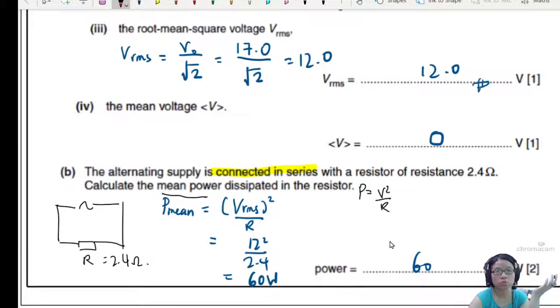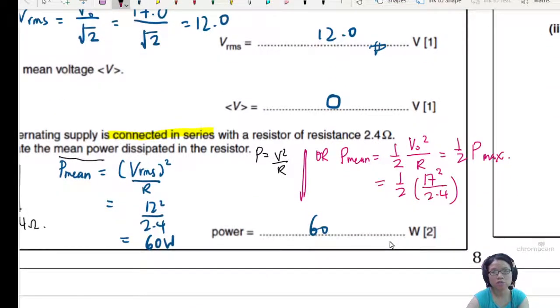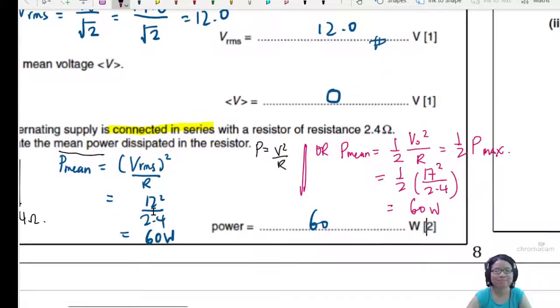An alternative that you can do is to use the peak value. Or average will be equal to half. You can take V naught square over R. Because average value here would be half maximum value. So you can read V naught what? This is 17. Remember? Square divided by 2.4. Peak is 17. So if you press your calculator, this will also give you 60 watt. So either half of the maximum or you just take the average. Because if you understand the derivation, they are actually the same thing.